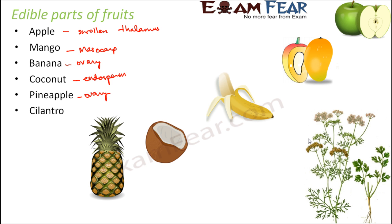In cilantro — cilantro is nothing but the coriander plant. Both the leaves and the fruits are edible. The coriander leaves are consumed directly, and the fruits are used as spices — coriander powder is used as a spice. So in cilantro, both the leaves and the fruits are edible.